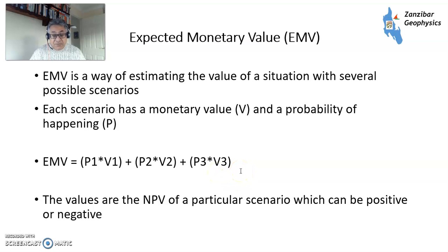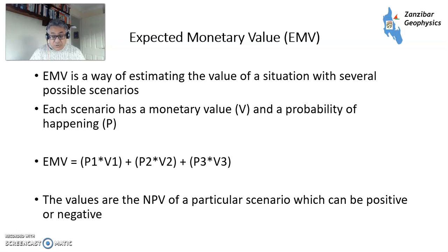The NPV of each particular scenario can be either positive or negative. The key is to find out what is the value going forward — is this a decision that you're expecting to have a successful result? "Expect" doesn't mean guarantee, because you could be on the failure branch. But the success branch will hopefully outweigh the failure branch and you will have a positive value.